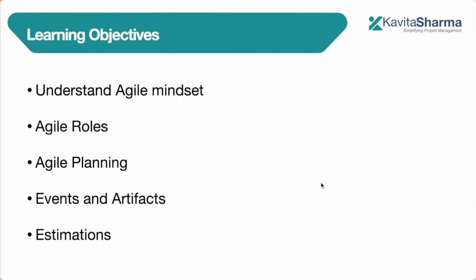In the next one hour or so, we're going to understand what is Agile, why and what happens when we talk about Agile roles, how the planning for Agile projects is going to happen, what are different events and artifacts specifically for Agile methodology called Scrum. I'm also going to walk you through how to estimate in case of Agile time boxes.